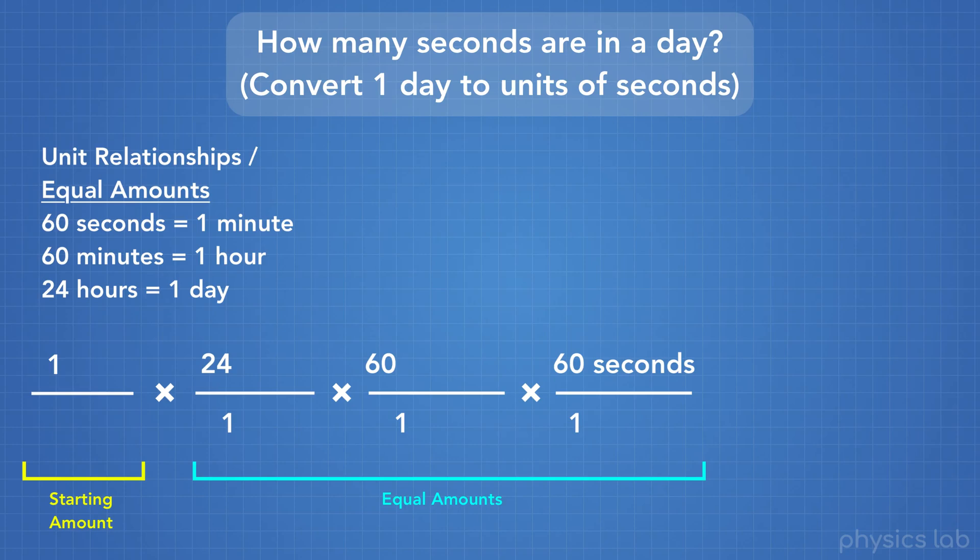On the top, we multiply 1 times 24 times 60 times 60 seconds, and we get 86,400 seconds. And on the bottom, we multiply 1 by 1 by 1, and we get 1. And since any number divided by 1 is just that number itself, we can just ignore the 1 on the bottom since it doesn't have a unit. And there's our answer. One day is equal to 86,400 seconds. We could also say that there's 86,400 seconds per day.